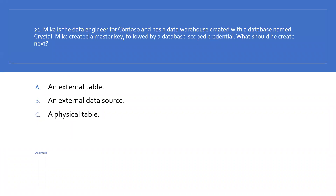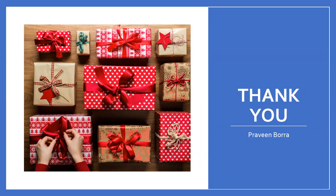Question 21: Mike is the data engineer for Quantoso and has a data warehouse with a database named Crystal. Mike created a master key followed by a database scoped credential — what should he create next? An external table, an external data source, or a physical table? After the master key and the database scoped credential are created, Mike should create an external data source that contains a URL to the blob location and the name of the database scoped credential. Option B is the right answer. We covered all 21 questions in this data engineer quiz. If you have any questions or concerns, please post in the comments. If you like this video, please subscribe and share the channel.